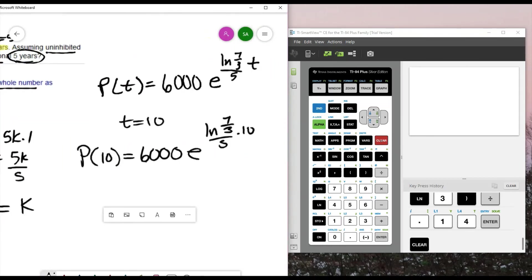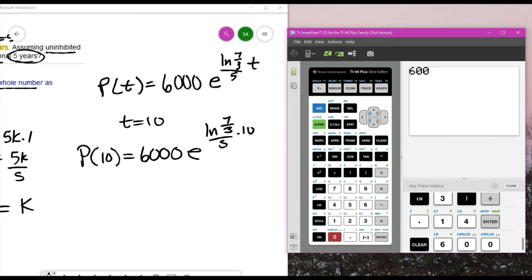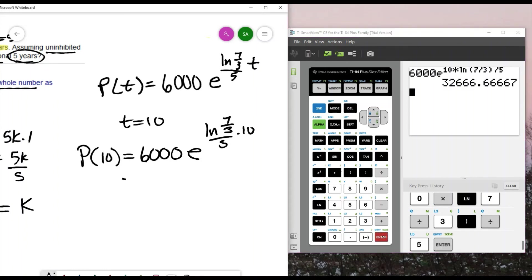In my calculator, I'm going to type 6,000 times e, and I like to put the 10 in the front, times natural log of seven-thirds, close parentheses for the log, and divide by five.